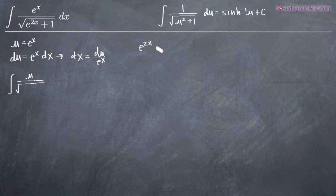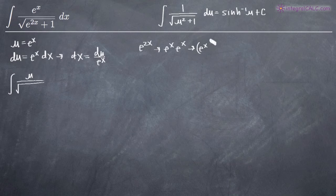e to the 2x is the same thing as e to the x times e to the x, or that's also the same as e to the x squared, right? So we can change e to the 2x into u squared. So we get u squared plus 1 under the square root sign in the denominator.